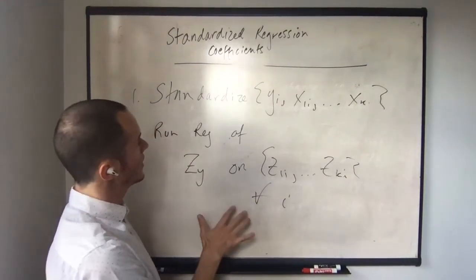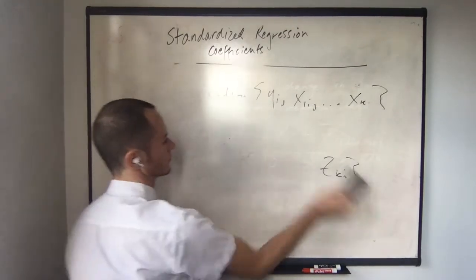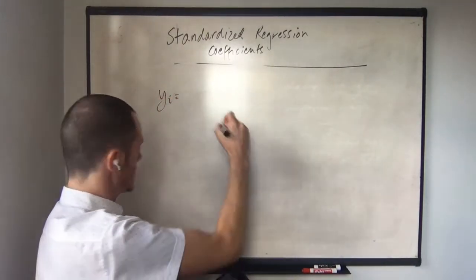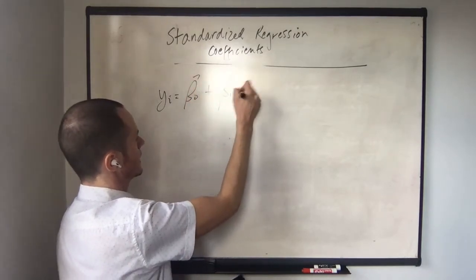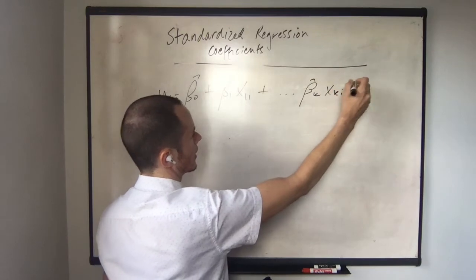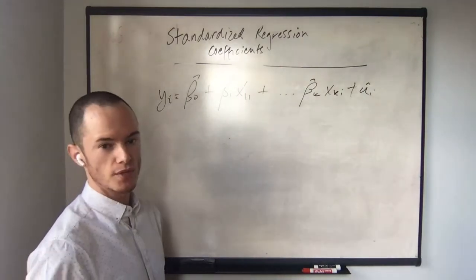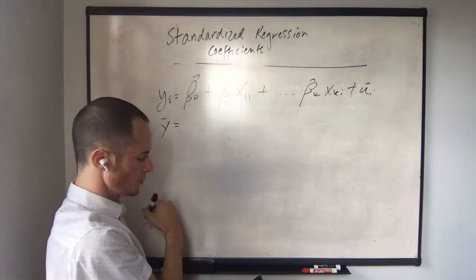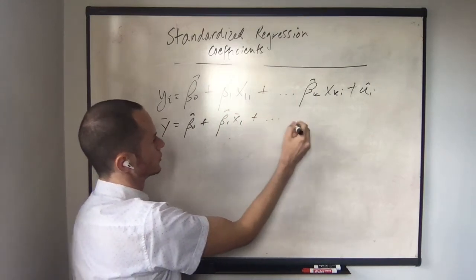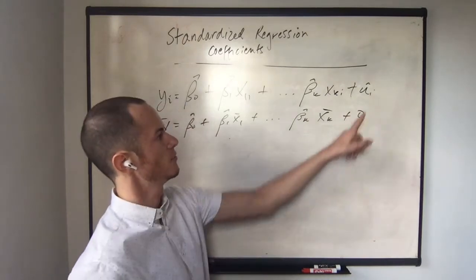Then you're going to run a regression of z1i through zki for all i — that gives us our standardized regression coefficients. We start with the estimated regression: yi equals beta-naught-hat plus beta-1-hat times x1i through beta-k-hat times xki plus ui-hat.